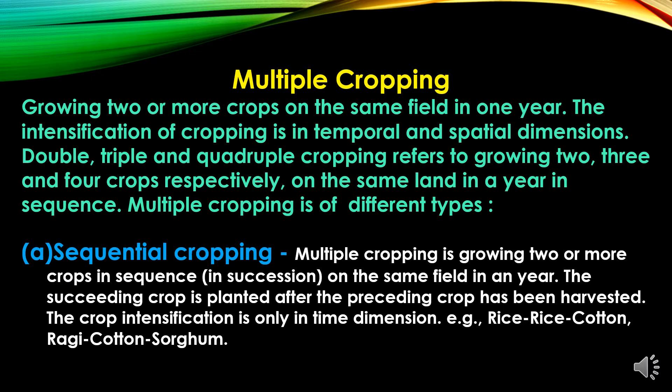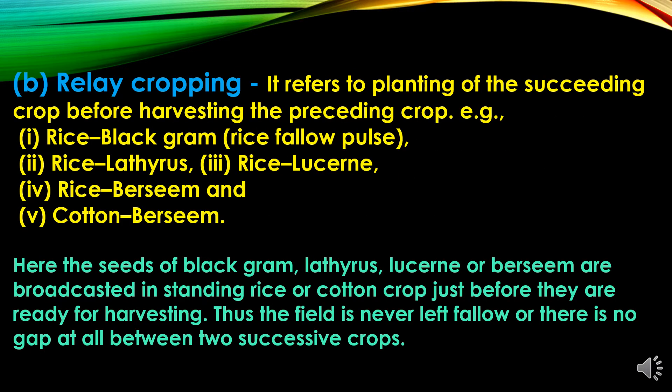Multiple cropping is of different types. The first type is sequential cropping — this is a type of multi-cropping in which two or more crops are grown in sequence in succession on the same field in any year. The succeeding crop is planted after the preceding crop has been harvested. The crop intensification is only in time dimensions, like rice-rice-cotton and ragi-cotton-sorghum.